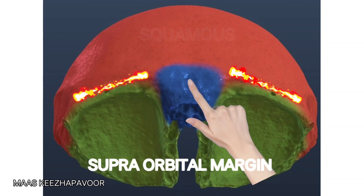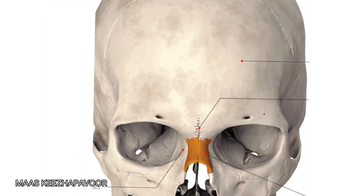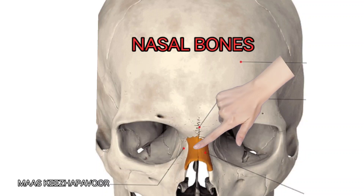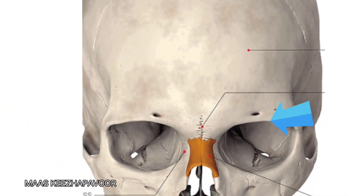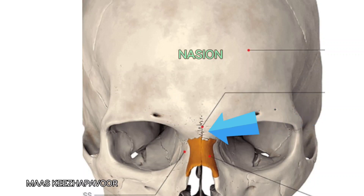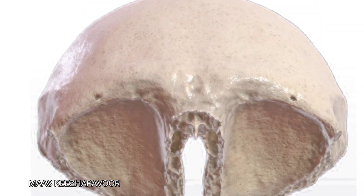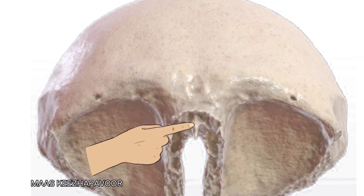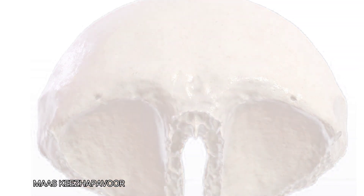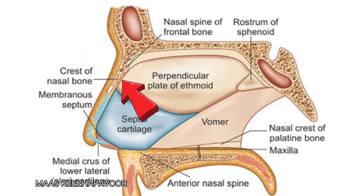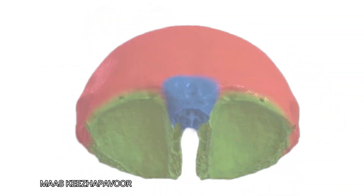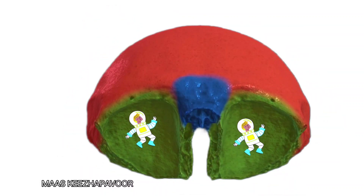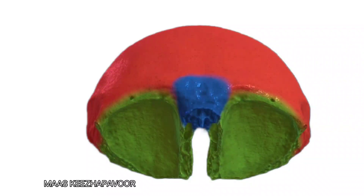The nasal part projects downwards from the squamous part in the midline between the right and left supraorbital margins. It articulates with the two nasal bones at the center, the frontal process of the maxilla, and lacrimal bones on either side. The meeting point of frontal and nasal bones is called the nasion. The nasal spine is a midline projection from the nasal notch, articulating with the nasal crest of the nasal bones in front and the perpendicular plate of the ethmoid behind.